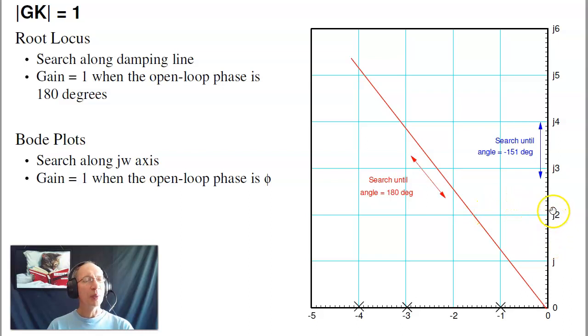Now in the frequency domain, what we're doing is we're searching along the j-omega axis, meaning s equals j-omega frequency domain. In this case, I search until the angles add up to something like minus 151 degrees for resonance of 2 dB. Once the angles add up, we get the gain one at that frequency. That's gain compensation.